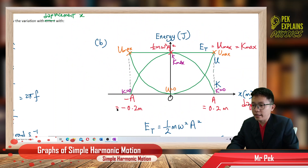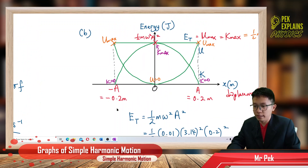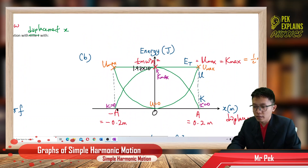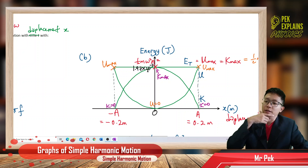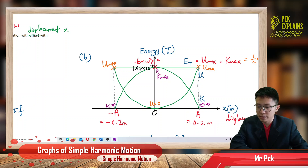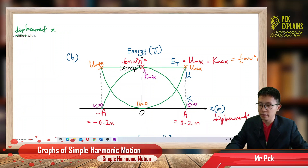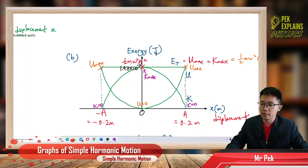Remember, when you draw the graphs you must label the maximum values with their numerical values. Label 1.97 × 10⁻³ on the energy axis. The unit on the y-axis is joules and on the x-axis is meters. Make sure all axes are properly labelled.